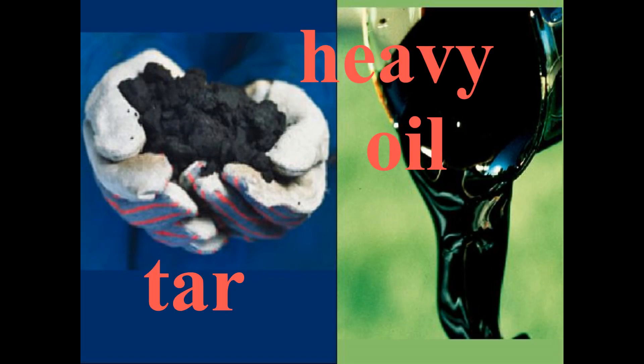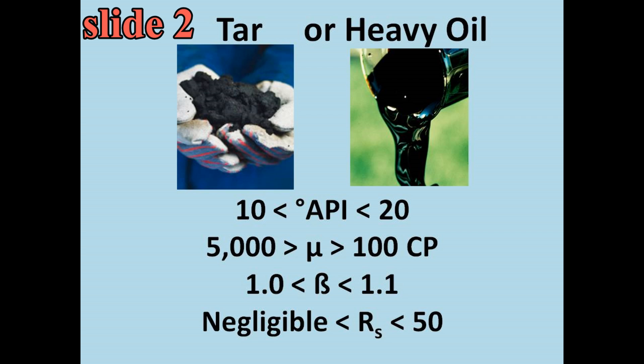In slide two, we have the classification for tar, or heavy oil. Its API gravity is greater than water, so it will float. Beta shows that there is some shrinkage, and the RS shows that some gas is released at the surface.